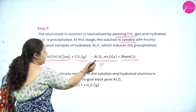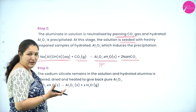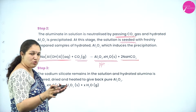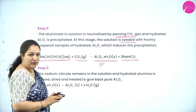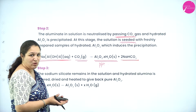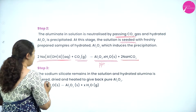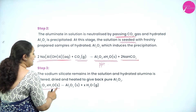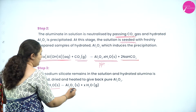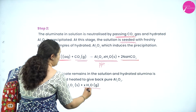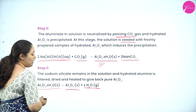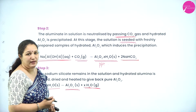The hydrated aluminium oxide precipitate obtained is filtered again. The solution is discarded as we only need the precipitate. The aluminium oxide precipitate is then taken and heated, removing all the water molecules, so that only pure aluminium oxide remains.